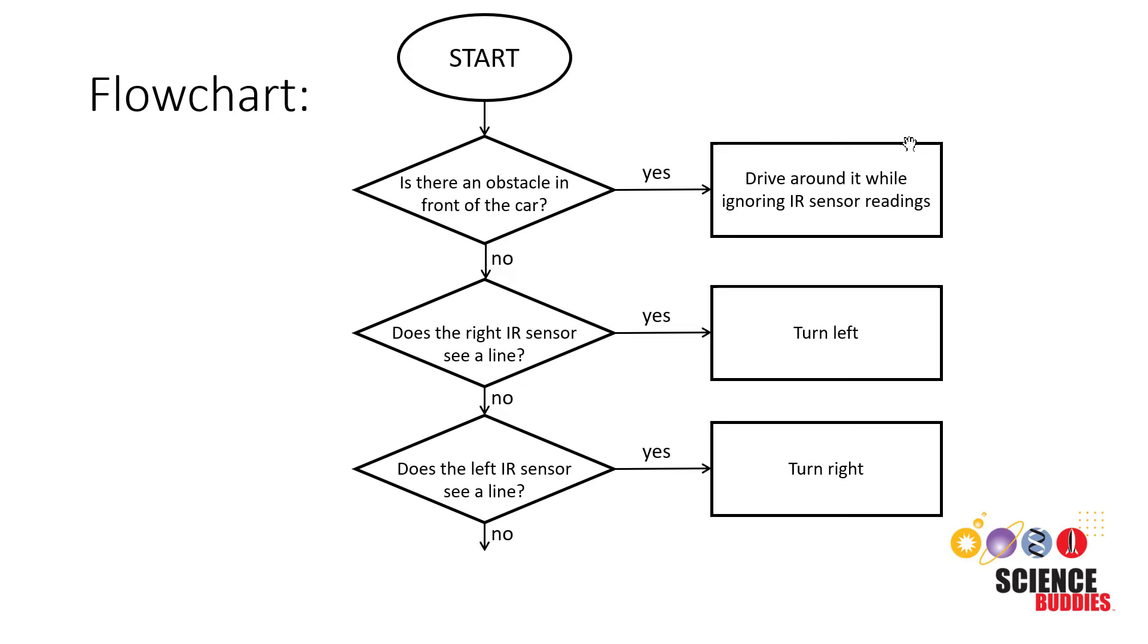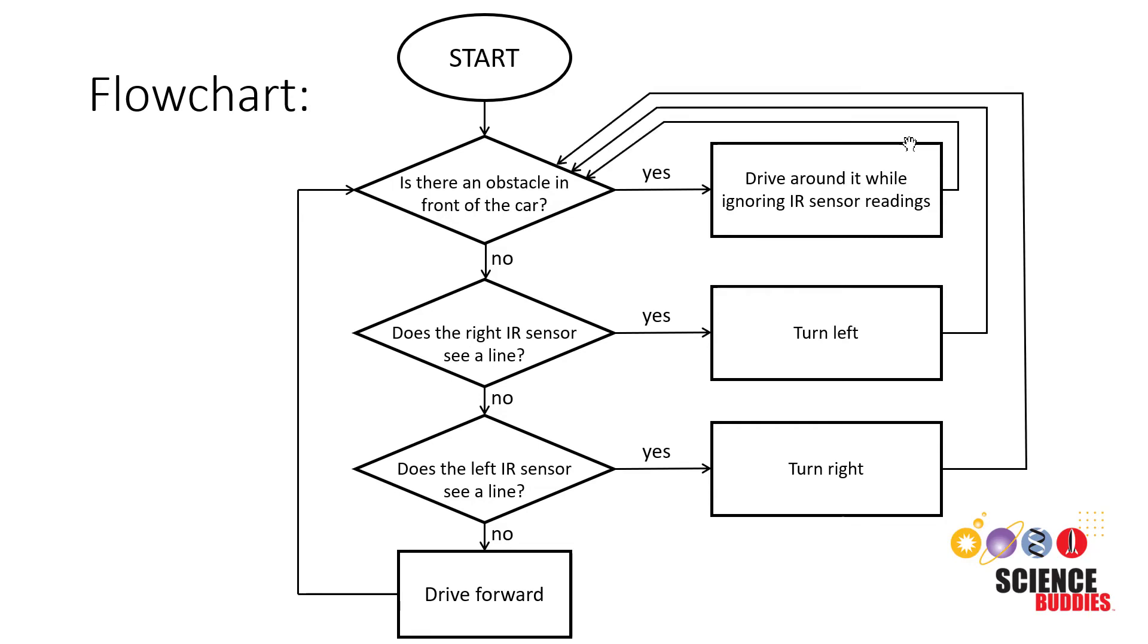Finally, if none of those conditions are met, then we know it's safe to drive forward. But we don't want our program to end there because then we would just drive forward forever without ever checking our sensors again. We have to loop way back up to the beginning and check again to see if there's an obstacle in front of the car. So each one of those action blocks needs to loop back to the beginning of the program.